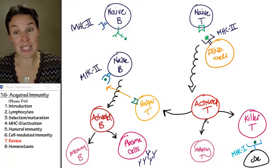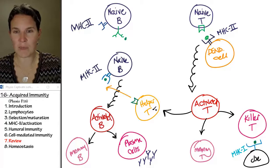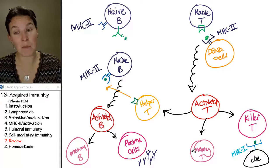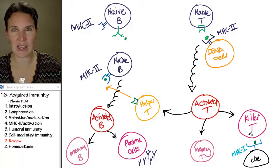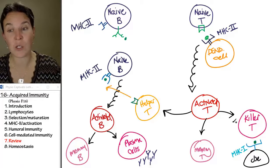The activated T cell, one of them became the helper T. One of them became the memory T. And then one of them becomes the primary effector cell, which is the killer T.